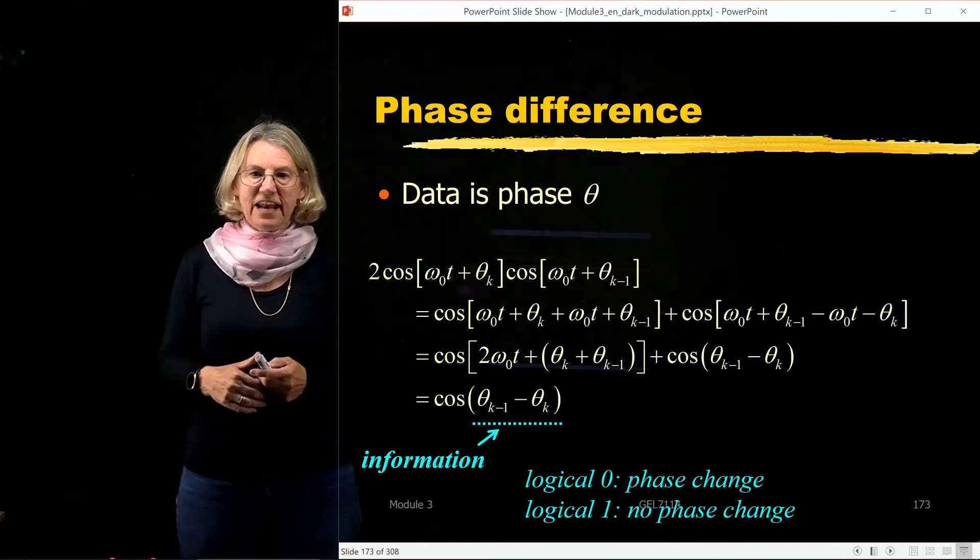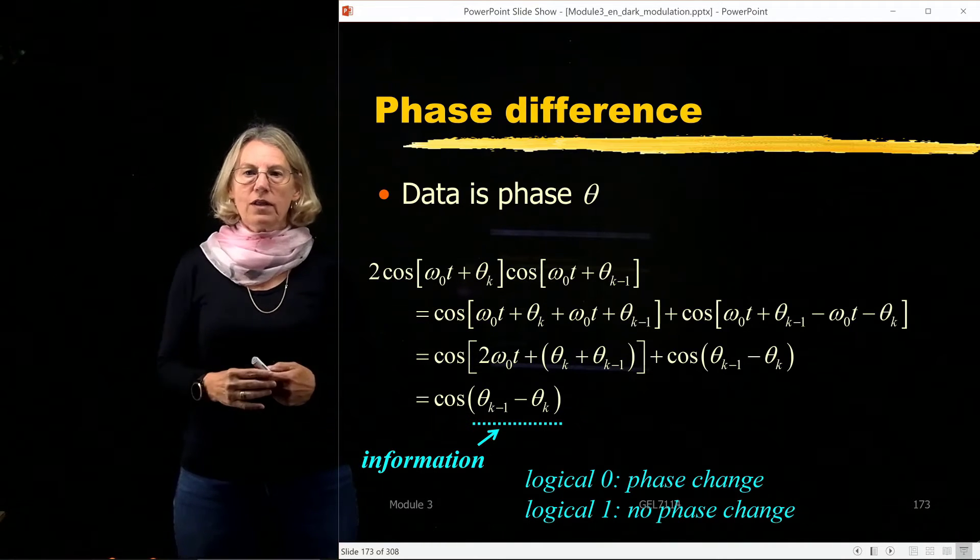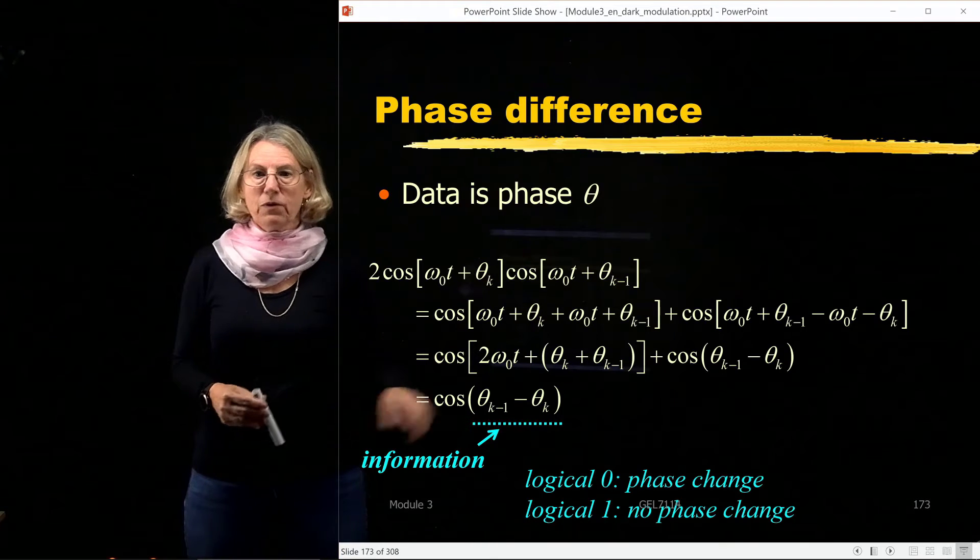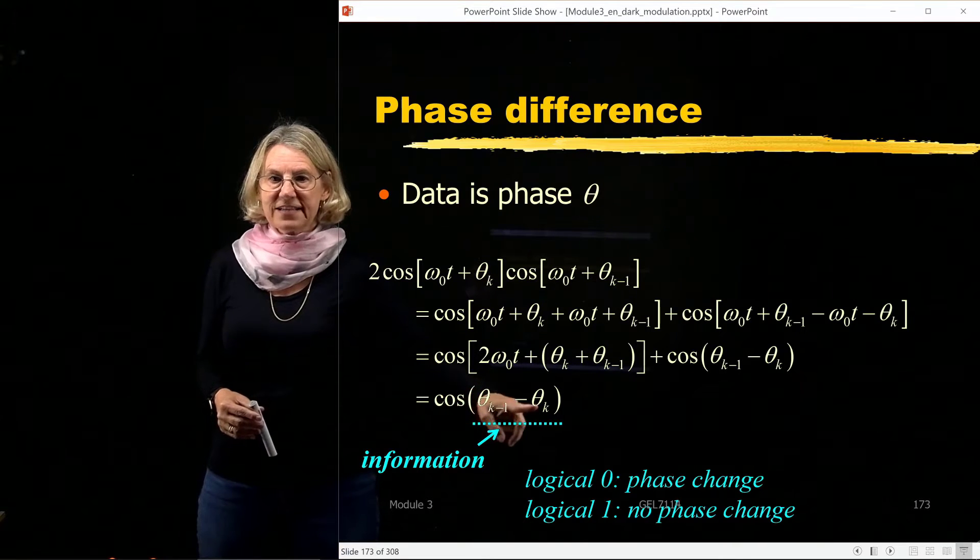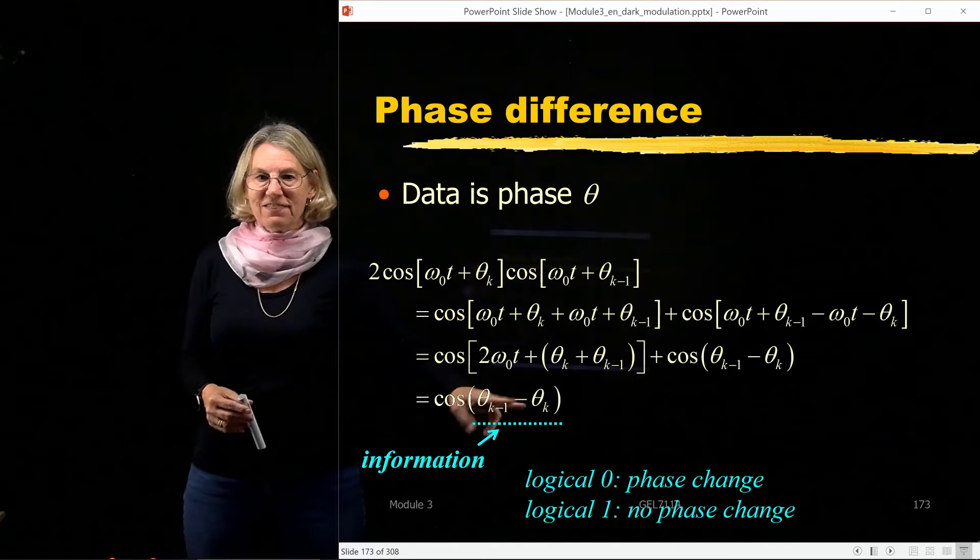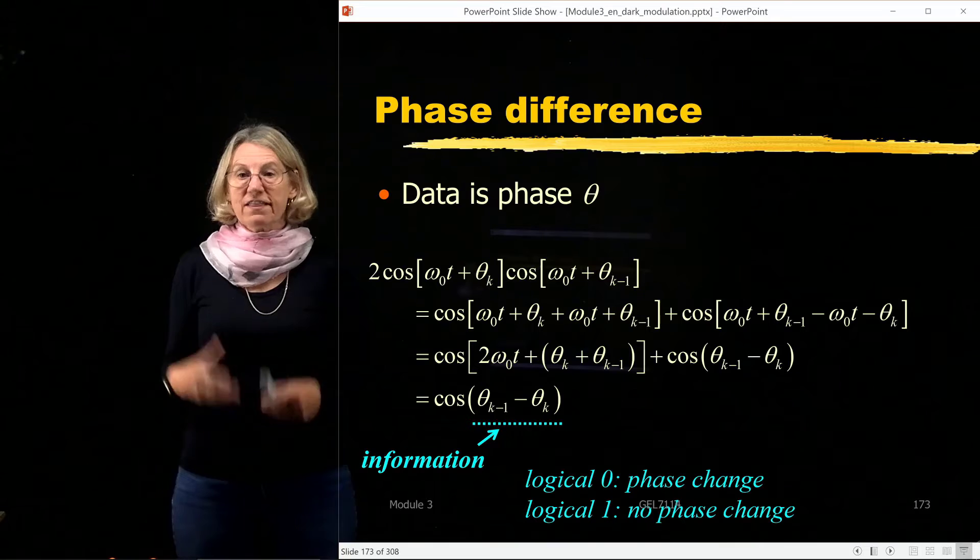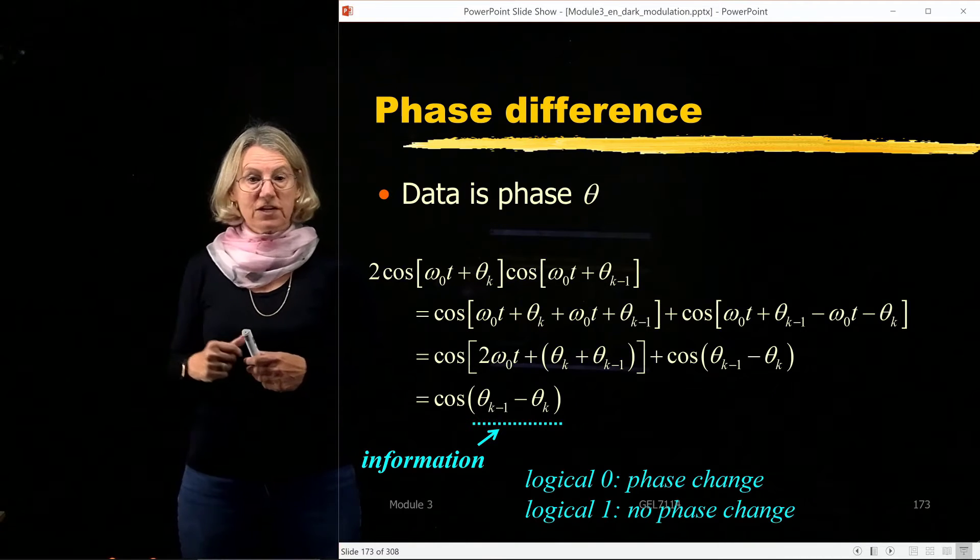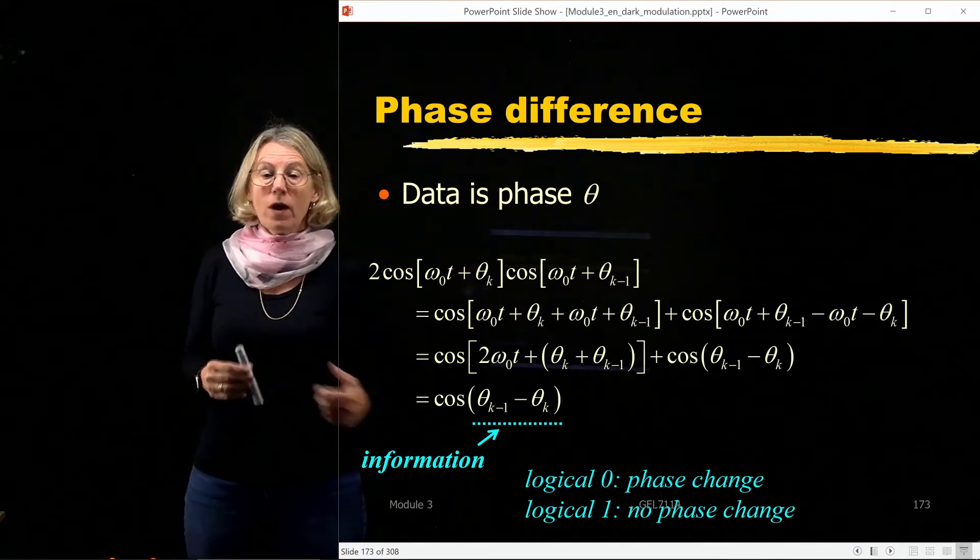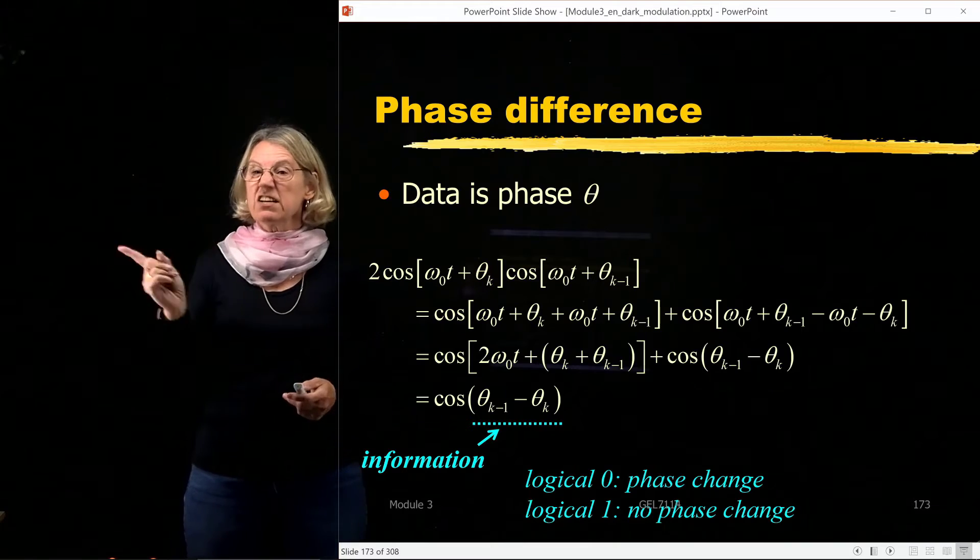So for instance, I could say that a logical zero will happen when there is no phase change at all. When you see that there's a phase at time k and k minus 1, and that these two are the same, that means that the difference will be zero. I'm going to say that's when I want to transmit a logical zero. And if I have a logical one I want to transmit, well then you're going to see a difference in the phase.